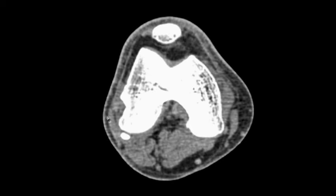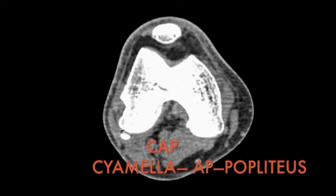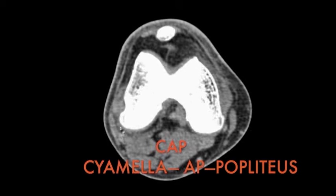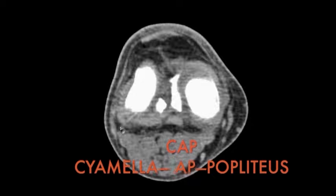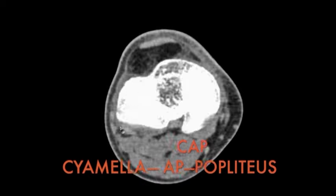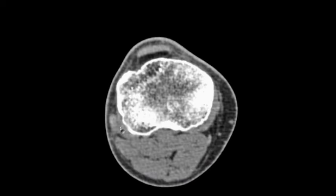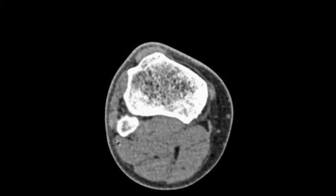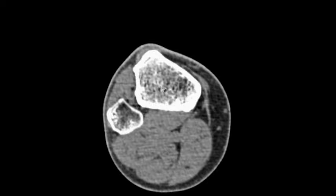Additionally, on the lateral side we can see the popliteus groove, and just posterior to that, an accessory ossicle is present in the popliteus tendon — this is a cyamella. To avoid confusion between cyamella and fabella, I have made a mnemonic: cyamella is better seen on AP projection and is located in the popliteus muscle, in contrast to the fabella.